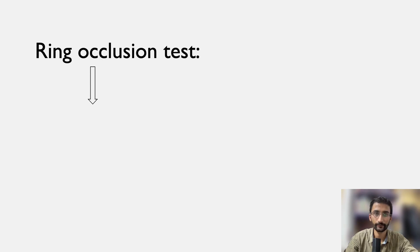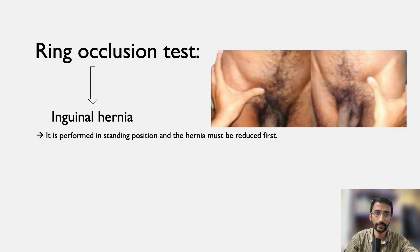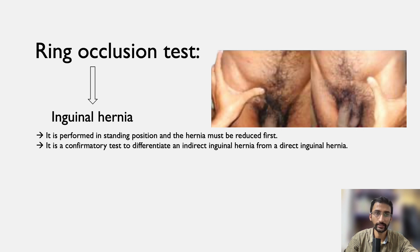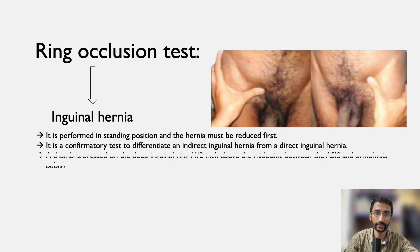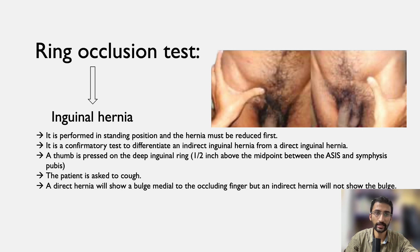The ring occlusion test is done in case of inguinal hernia. It is performed in the standing position and the hernia must be reduced first. It is a confirmatory test to differentiate an indirect inguinal hernia from a direct one. A thumb is pressed on the deep inguinal ring, half an inch above the midpoint between the anterior superior iliac spine and symphysis pubis. The patient is asked to cough. A direct hernia will show a bulge medial to the occluding finger, but an indirect hernia will not show the bulge.